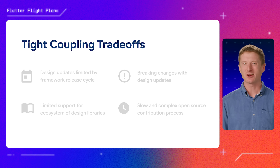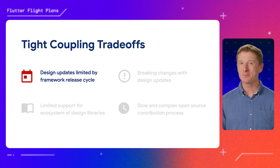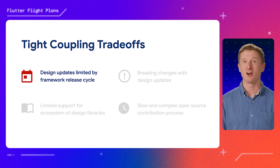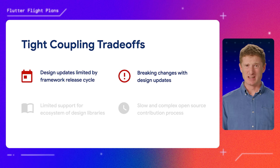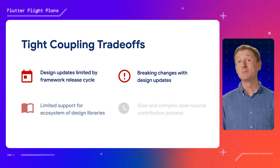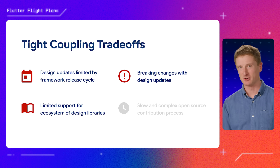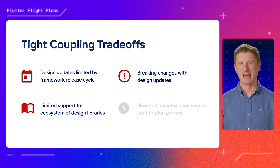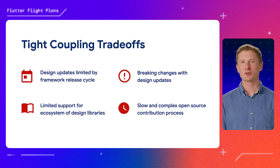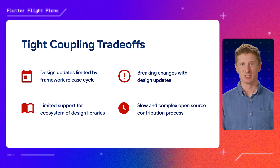The immediate availability of Material and Cupertino widgets in the framework has played a big part in why so many developers love Flutter and why it's gotten to where it is today. However, as Flutter has grown, this tight coupling has come with the cost of slower adoption of new design features — since design changes are tied to the framework release cycle — breaking changes that pop up whenever there are design updates, limited support for an ecosystem of design libraries, and a slow and complex contribution process needed for minimizing the risk of framework regressions. This is the inherent issue of scaled impact. These once-acceptable trade-offs have compounded into real friction points that developers have to work through.